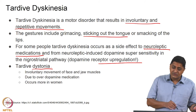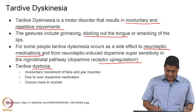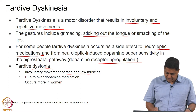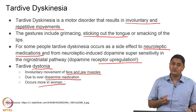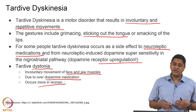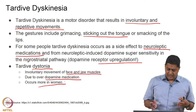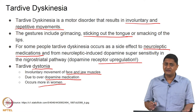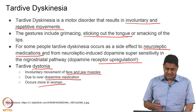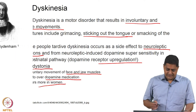Tardive dystonia is related to both tardive dyskinesia and dystonia. It involves involuntary movements of face and jaw muscles, again due to dopamine medication. It occurs more in women compared to men, and more in older people compared to younger people. In some cases it also happens as a result of other medication side effects.